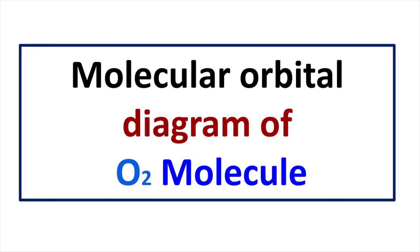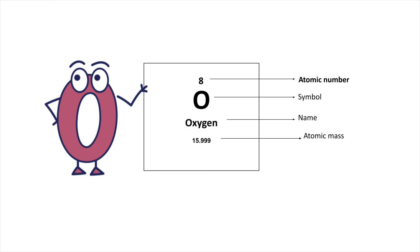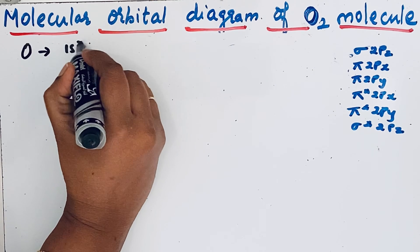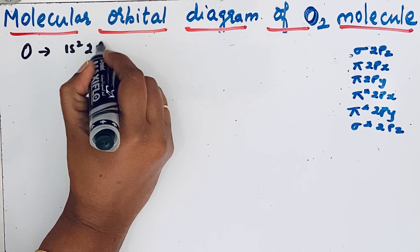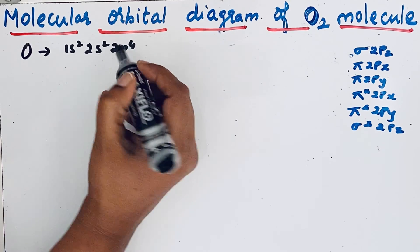Welcome to Aurora Chemistry for everyone. Let us analyze how to draw the molecular orbital diagram of oxygen molecule. Oxygen atomic number is 8, so from that we can write the electronic configuration: 1s2, 2s2, 2p4.